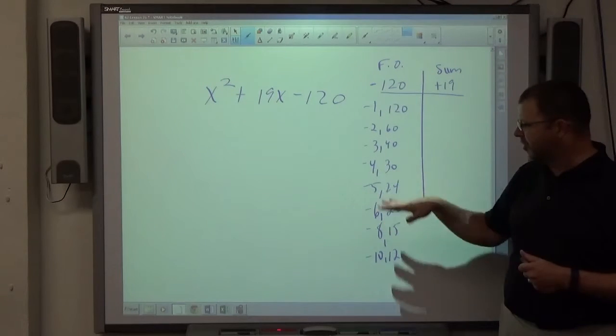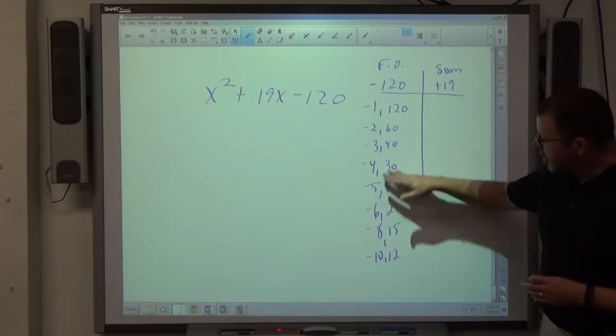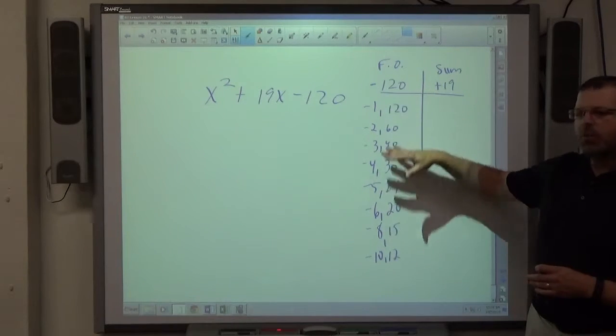So if you get a decimal, it doesn't divide evenly, so skip it. So 7 was a decimal, 9 was a decimal, 11 was a decimal, skip them. There's my whole list, every possible way to make -120 with integers.